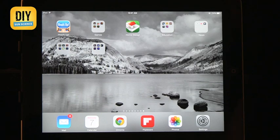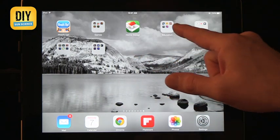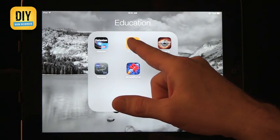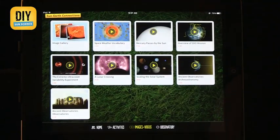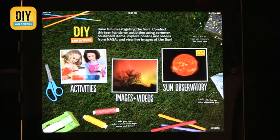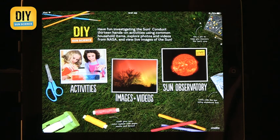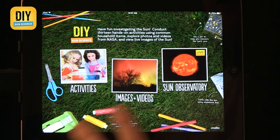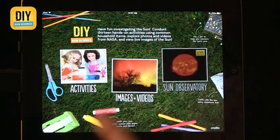The first app I want to talk about is actually called DIY Sun Science. DIY Sun Science is a fantastic development from UC Berkeley and from NASA, and it has a lot of activities around light, space, and other things. So here's one thing that you can do.